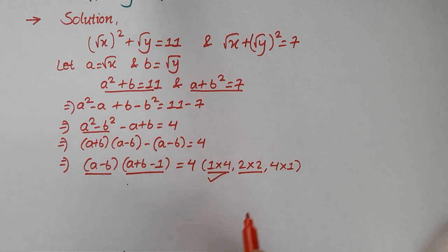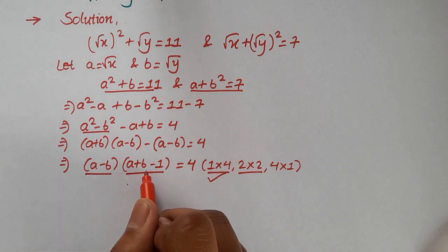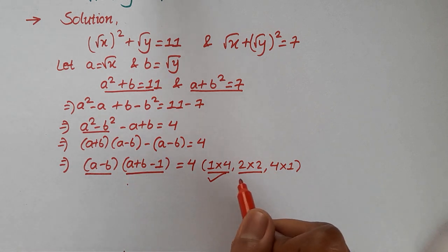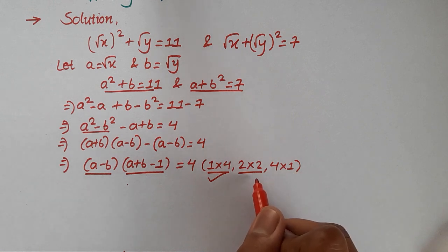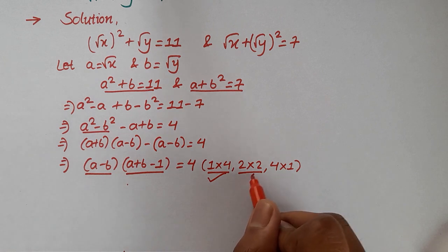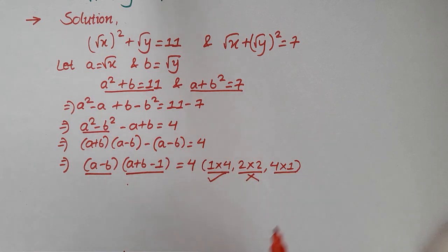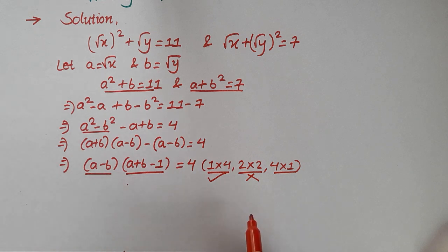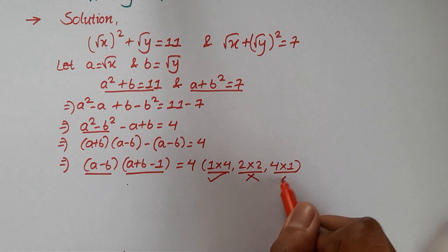For the second possibility, a minus b equal to 2 and a plus b minus 1 equal to 2 would mean both terms are equal, but the first must be less than the second, so this possibility is eliminated. The third possibility has the first term greater than the second, which is also not true, so we eliminate that as well.